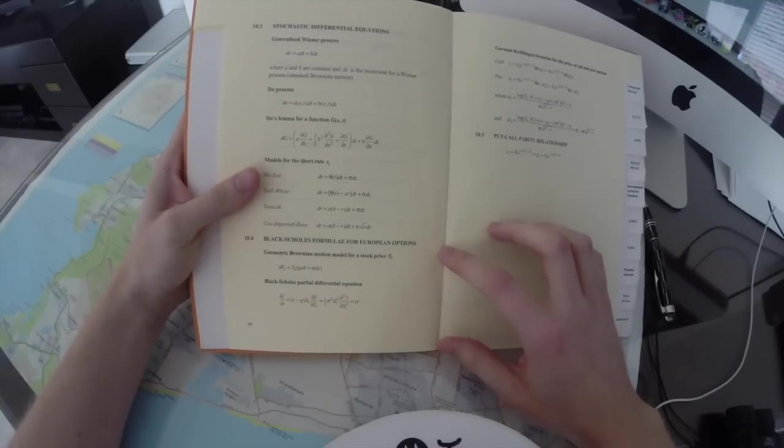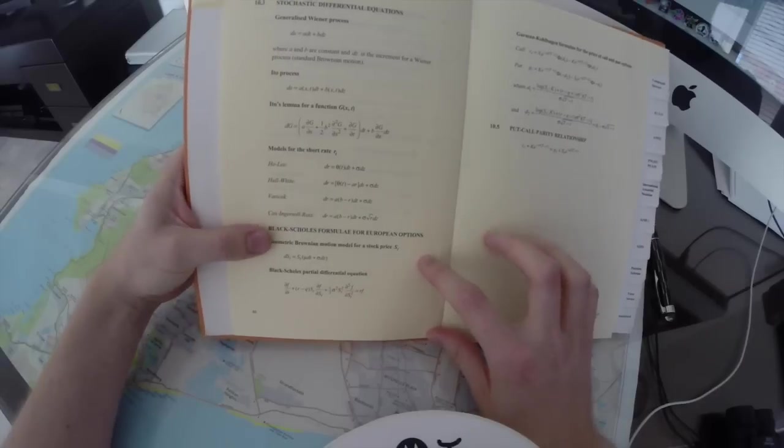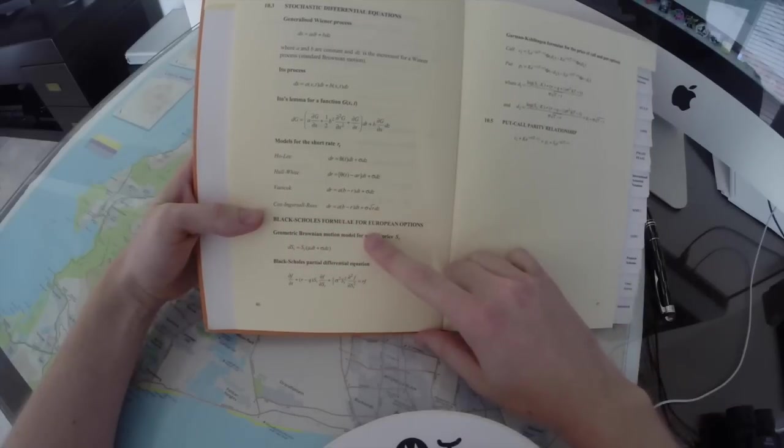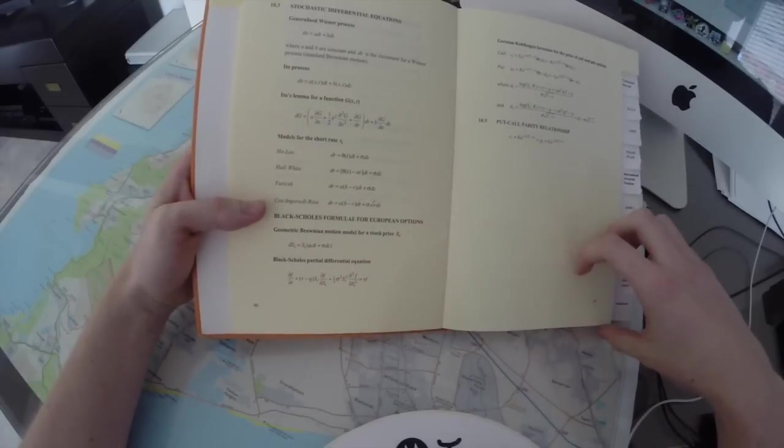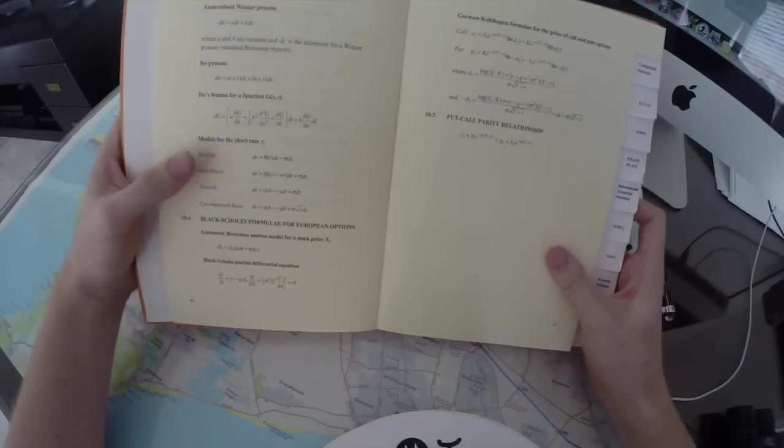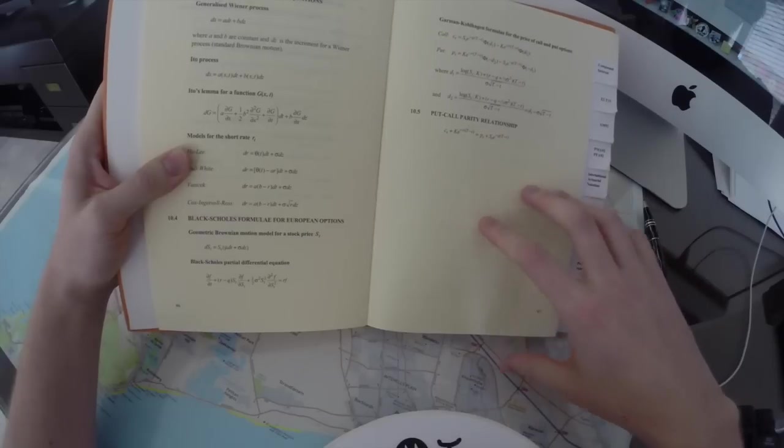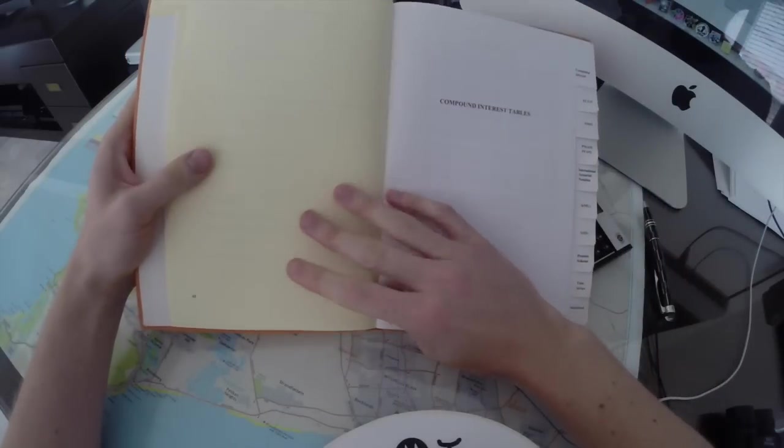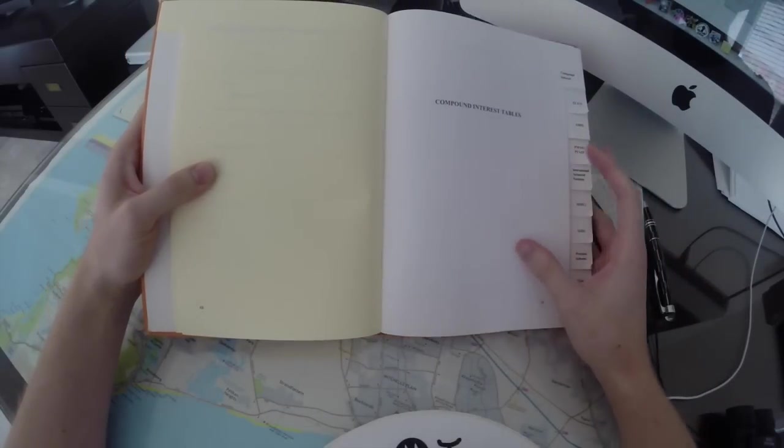And then a famous formula, which other professions also familiar with, is the Black-Scholes formula for European options, and remember, you can actually go quite far in depth with this, and then finally, put call parity relationships, and yeah, that is the formulas in this book.